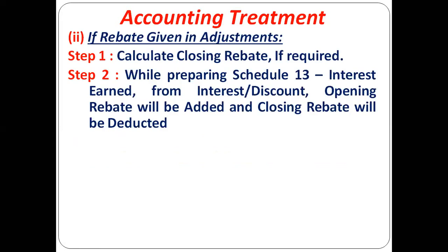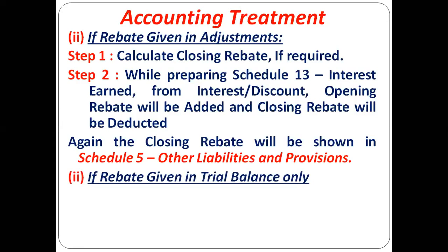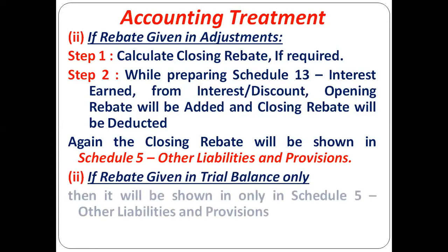This adjustment has a two-fold impact. The second fold is that the closing rebate will be shown under Schedule 5 — Other Liabilities and Provisions — as a liability. So two places: deduction from interest and discount in Schedule 13, and shown on the liabilities side in Schedule 5. If it is given only in the trial balance and not in adjustments, then it will be shown only in Schedule 5 Other Liabilities and Provisions.